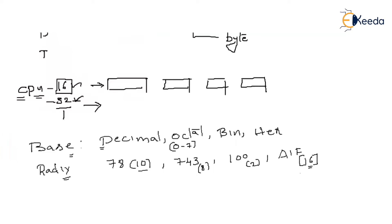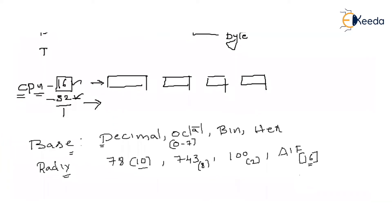Every number system has several symbols equal in count to its radix. For decimal, the total number of symbols equals 10, from 0 to 9. For octal, symbols range from 0 to 7 — that is 8 symbols.